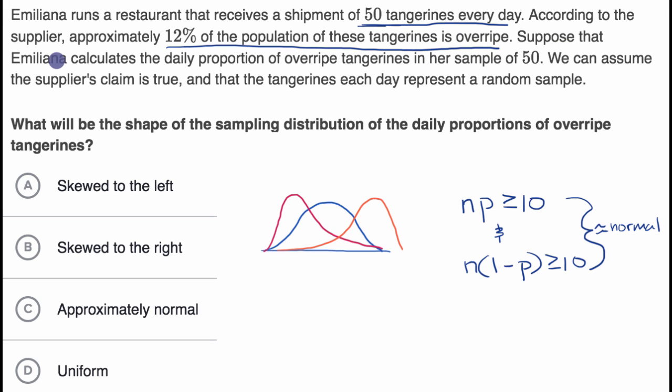Suppose that Emiliana calculates the daily proportion of overripe tangerines in her sample of 50. We can assume the supplier's claim is true and that the tangerines each day represent a random sample. What will be the shape of the sampling distribution of the daily proportions of overripe tangerines? Pause this video and see if you can answer this.